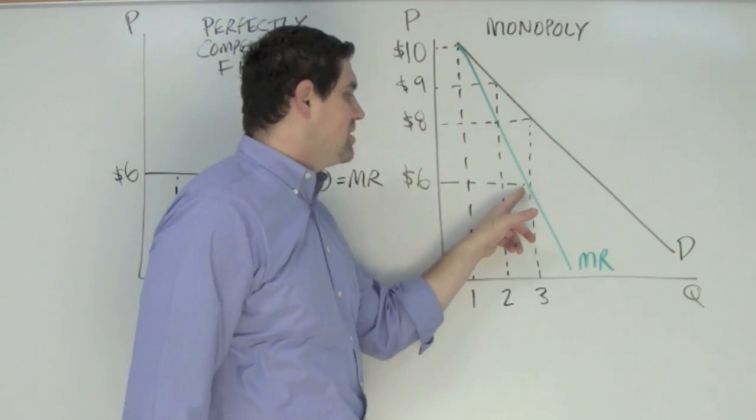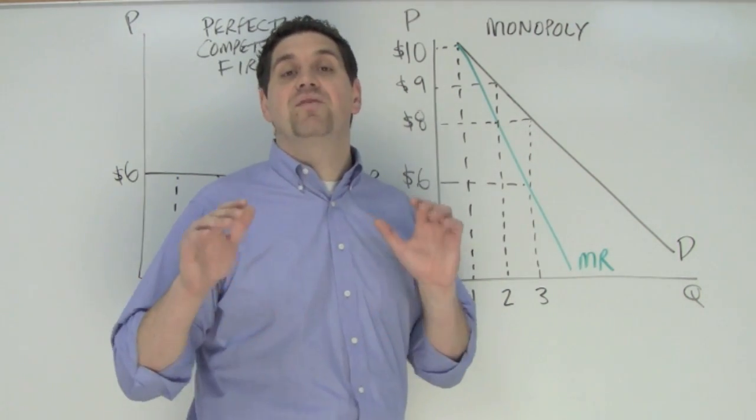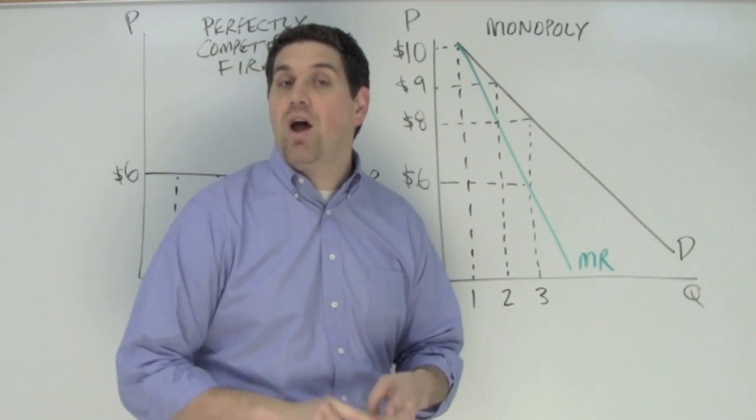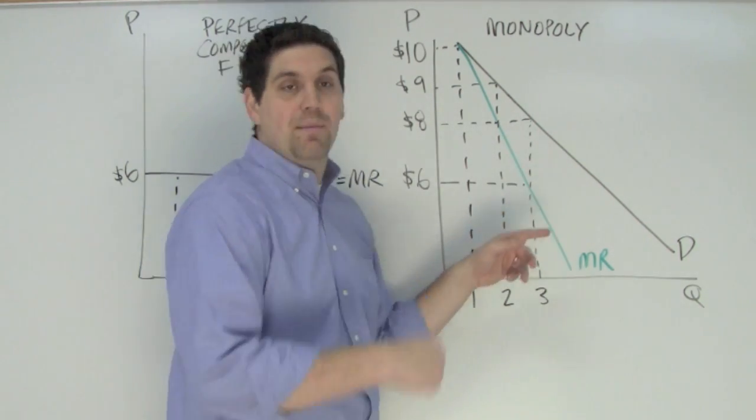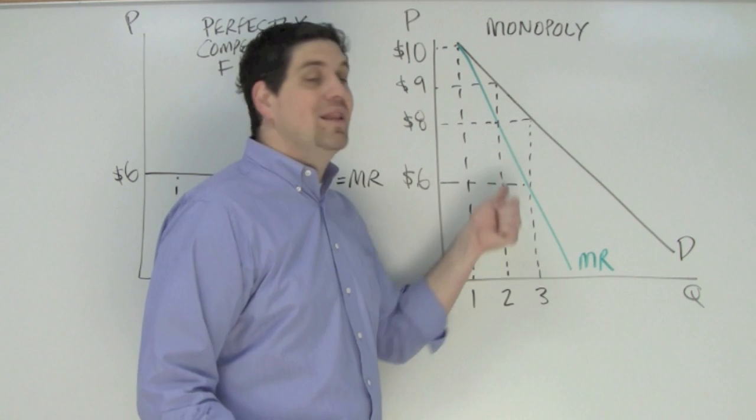But my additional revenue is only $6. This concept is super important because it happens for monopolies, monopolistic competition, and oligopolies. They're all price makers. To sell another unit, they've got to lower the price to get more people to buy, and the additional revenue is going to be less than that price.